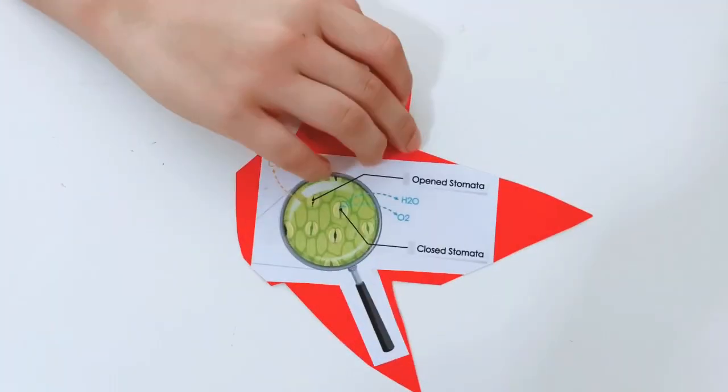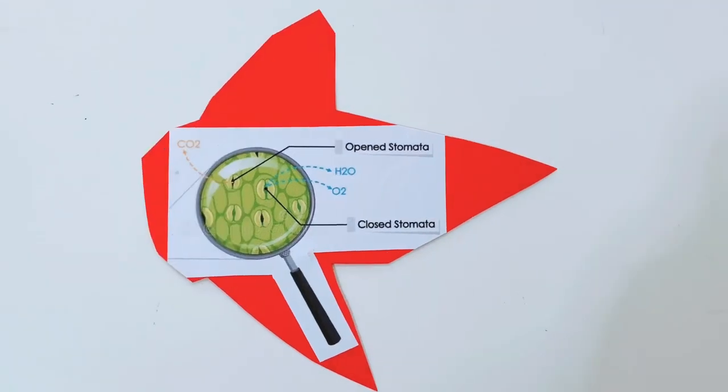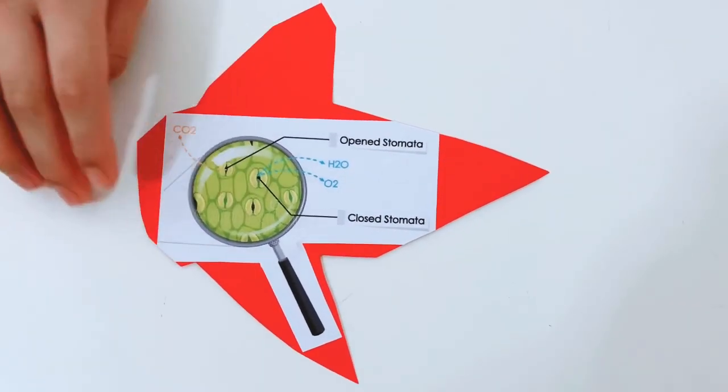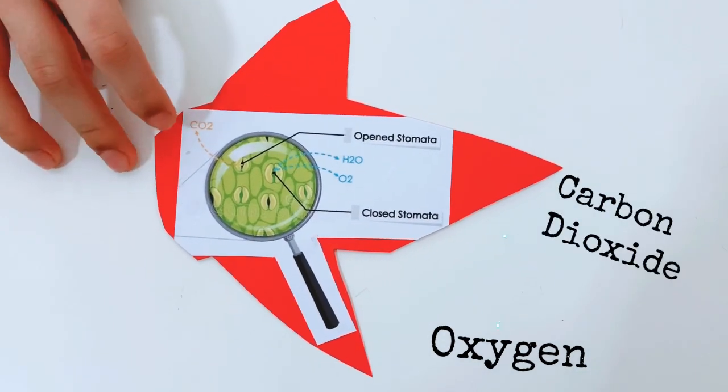At the back of the leaf, there are tiny openings called stomata. These tiny openings help the plant to breathe and exchange gases, carbon dioxide and oxygen.